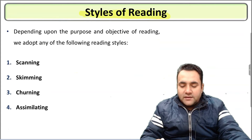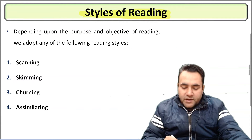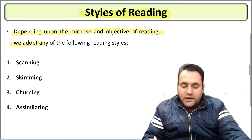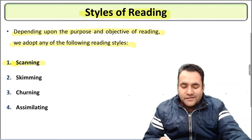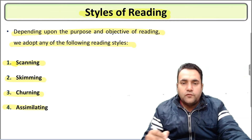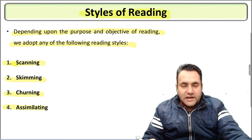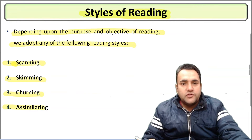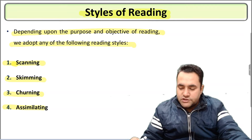Now let's talk about the styles of reading. Depending upon the purpose and objective of reading, we adopt any of the following reading styles. Number one is scanning, number two is skimming, number three is churning, and number four is assimilating. These are the 4 reading styles. We will understand each of them one by one.